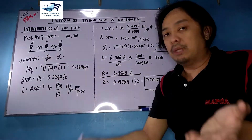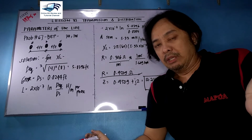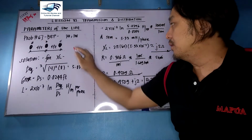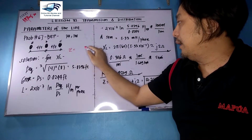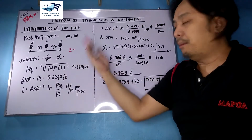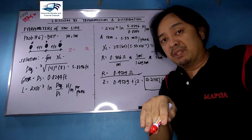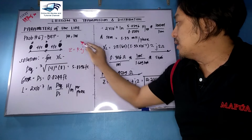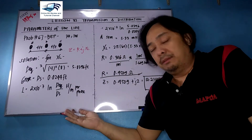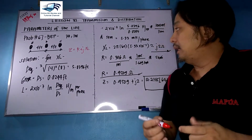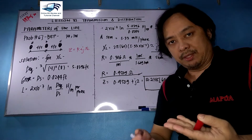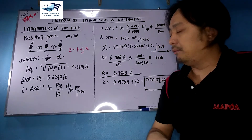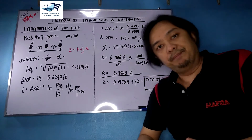The transmission line has conductors A, B, and C with four-feet spacing. The plan of attack is: first get X_L using 2 pi f times L, then since we also have R, add R and X_L since they are connected in series, and from there get the complex result in either rectangular or polar form.